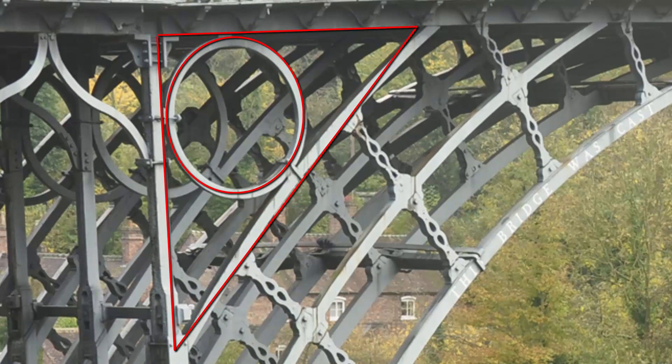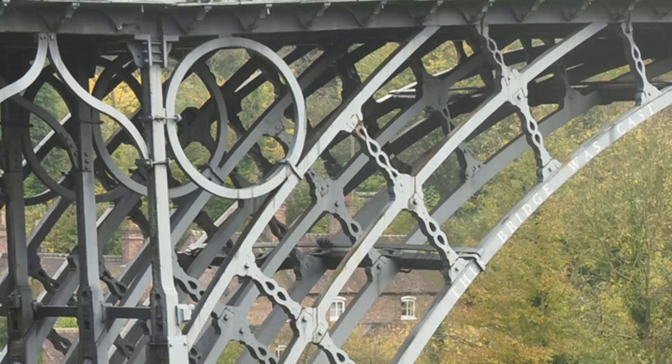In this bridge we can see a circle fitted inside a triangle. They were not welded but tied using nuts and bolts. Welding cast iron was not possible. This circular part inside a triangle provided load bearing function for the bridge.